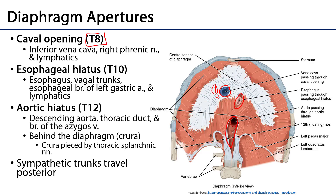Left lateral and a little posterior to the caval opening is the esophageal hiatus — the space through which the esophagus is transmitted. Also associated with the esophagus are the vagal trunks, both anterior and posterior. An esophageal branch of the left gastric artery, which is a branch of the celiac trunk, ascends through that esophageal hiatus to follow the esophagus, and there will also be some lymphatics. Those vagal trunks will be innervating the gut tube, so it's a good thing they're traveling along with the esophagus. The esophageal hiatus is at T10.